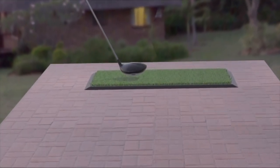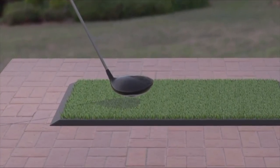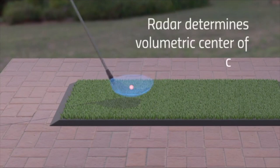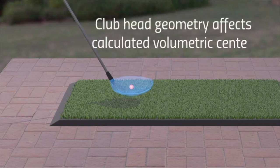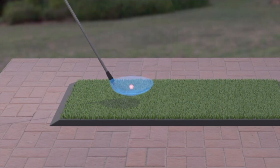When the ball leaves the clubface, the radar signal then continues to track the ball as much as it possibly can during its uninterrupted flight. Because the radar is sitting behind, the disruption of those waves will give the software a picture of the basic volume of the golf club.